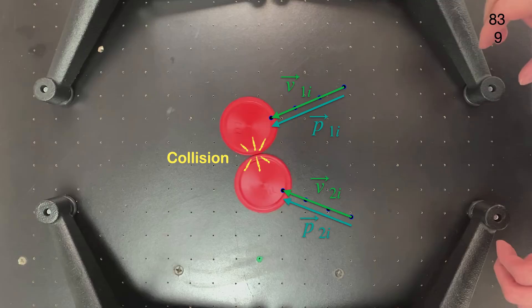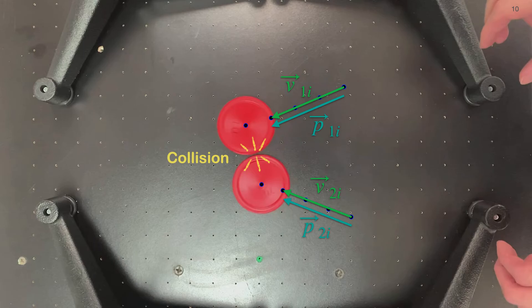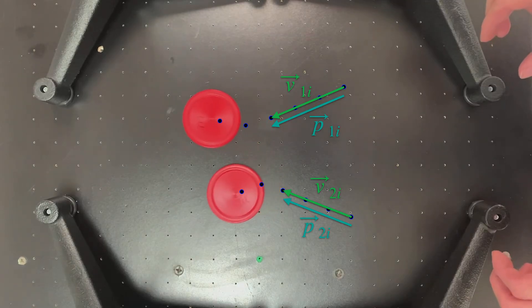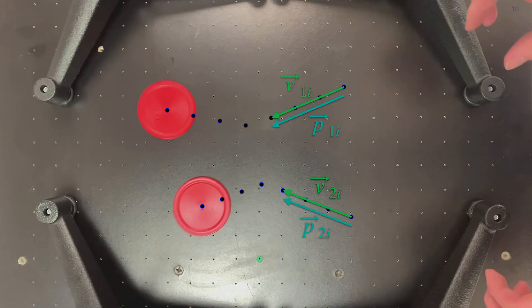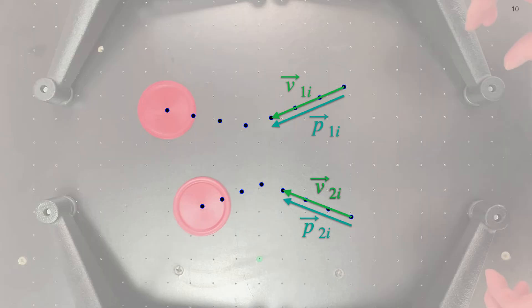One frame later the collision takes place, and then one frame after that we have a new dot that is being placed exactly 10 frames after the previous one that appeared before the collision. Continuing from there, now we can construct new velocity vectors and new momentum vectors.